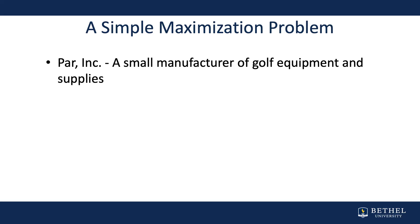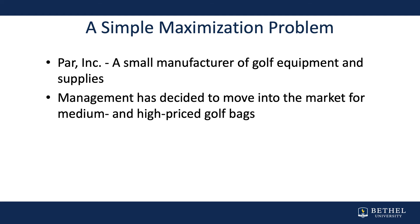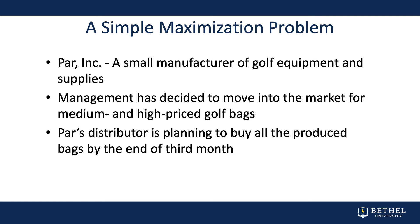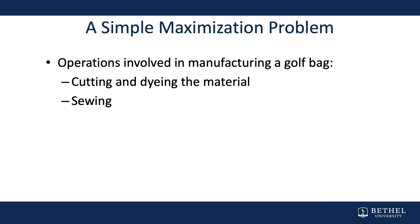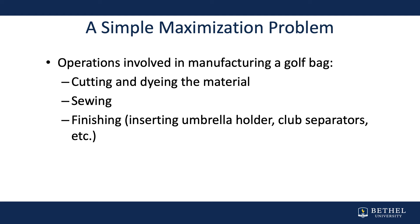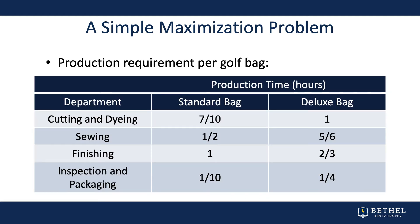Imagine you have a company called Par Incorporated, a small manufacturer of golf equipment and supplies. Management has decided to move into the market for medium and high-priced golf bags. Par's distributor is planning to buy all of the produced bags by the end of the third month. Operations involved in manufacturing a golf bag include cutting and dyeing the material, sewing, finishing, and the inspection and packaging process. Here are the production requirements per golf bag.